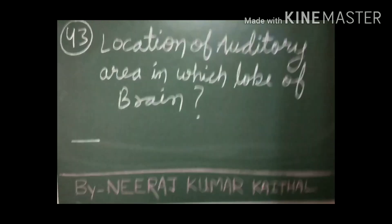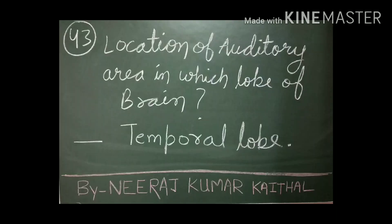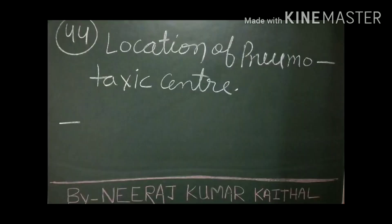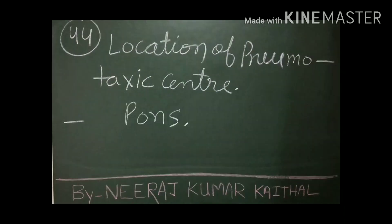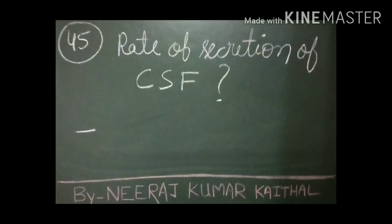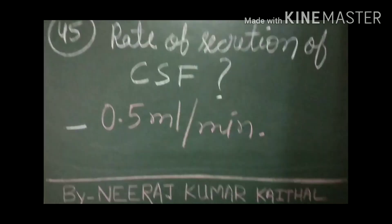The location of the auditory area is in the temporal lobe of the brain. The location of the pneumotaxic center is in the pons. The normal rate of CSF secretion is 0.5 ml per minute.